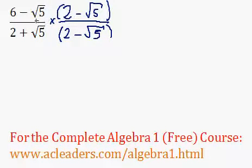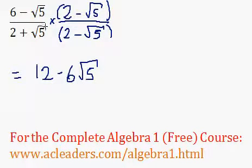Okay, so now I'm going to have to FOIL the top and the bottom as well. Starting with 6 times 2, we get 12. 6 times negative root 5 is negative 6 root 5. Negative root 5 times 2 is negative 2 root 5. And negative root 5 times negative root 5 is positive root 25, which is just 5.